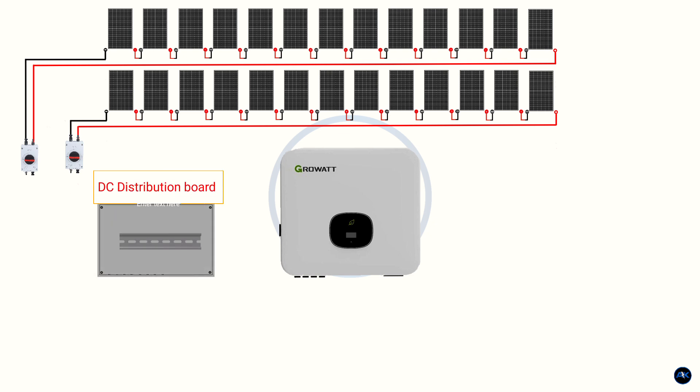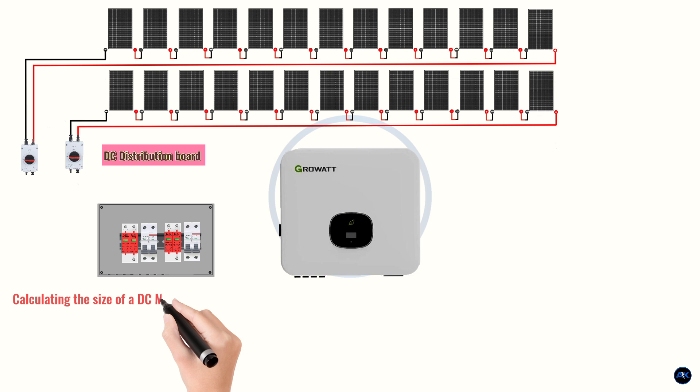DC distribution board or DCDB. A DC distribution board is a panel that houses DC circuit breakers, MCBs, surge protection devices or SPDs, and other components to distribute DC power safely and efficiently. Calculating the size of a DC MCB involves determining the appropriate current rating to protect the circuit from overcurrent and short circuits. Here's a breakdown of the formula and the factors to consider. For a solar string with an I short circuit current of 14 amperes, the recommended DC circuit breaker size would be 20 amperes. Here's the calculation: ISC short circuit current X 1.56 safety factor equals ICB. 14 amperes X 1.56 equals 21.84 amperes. Rounding up to the nearest standard breaker size gives you 20 amperes.